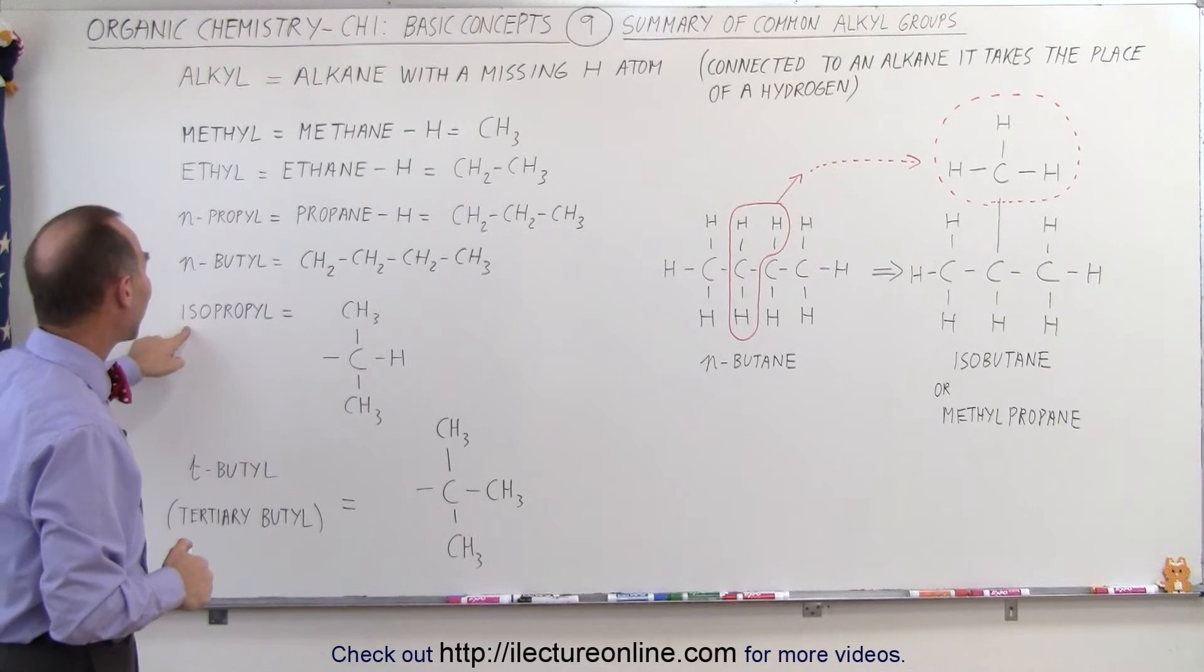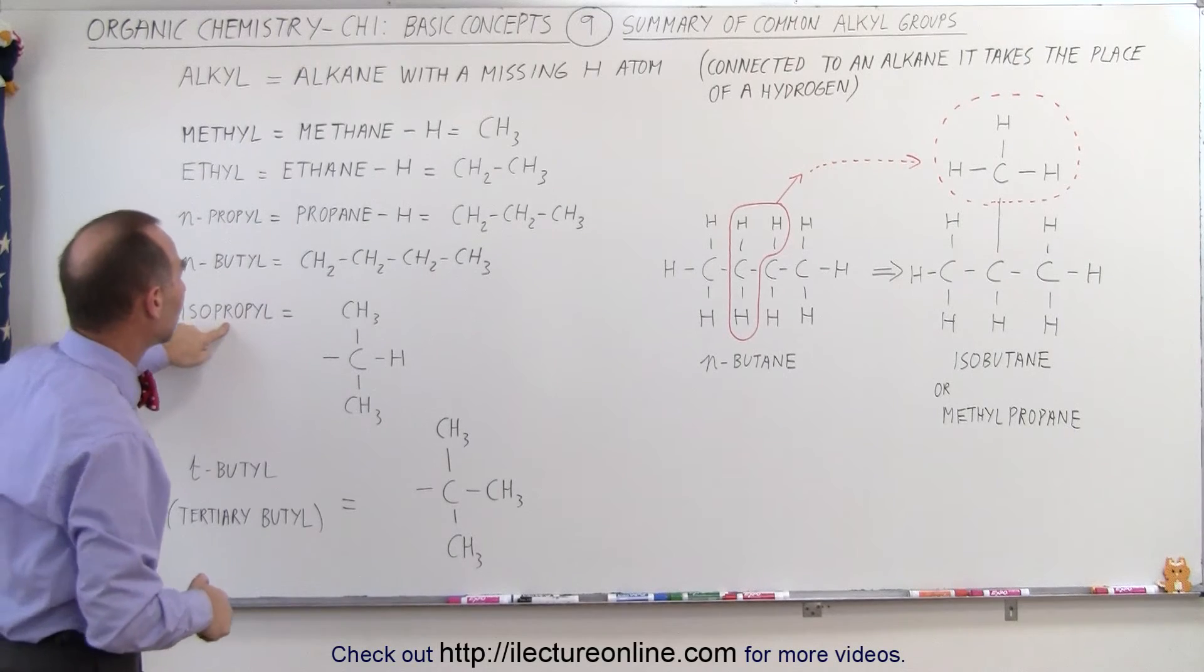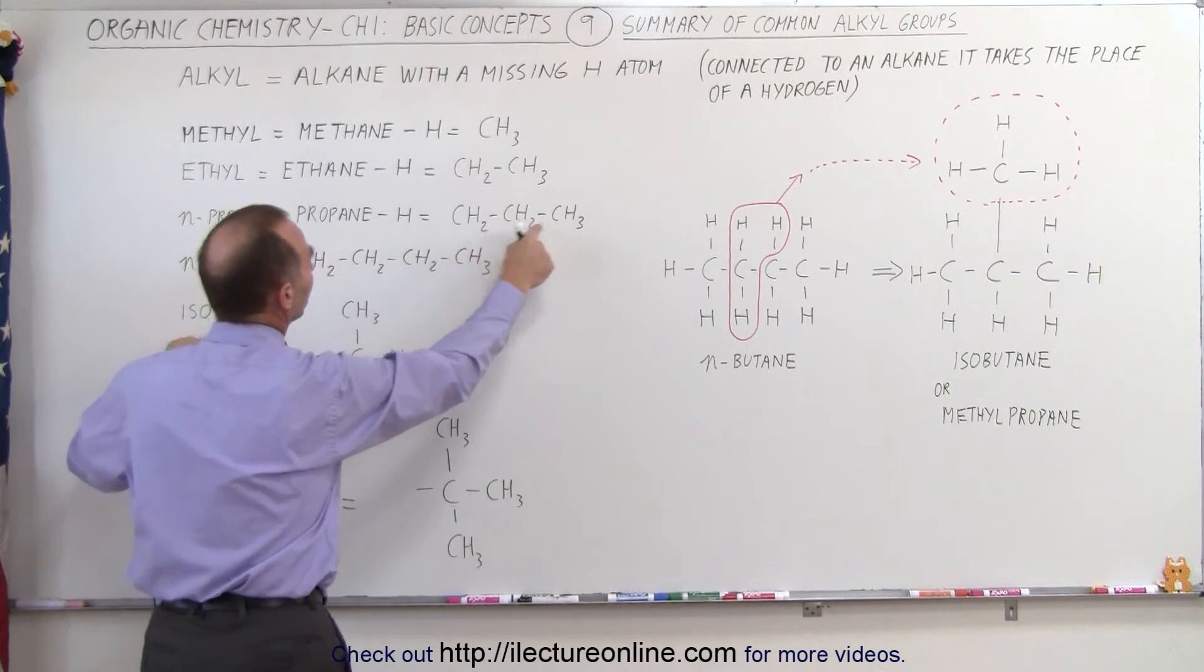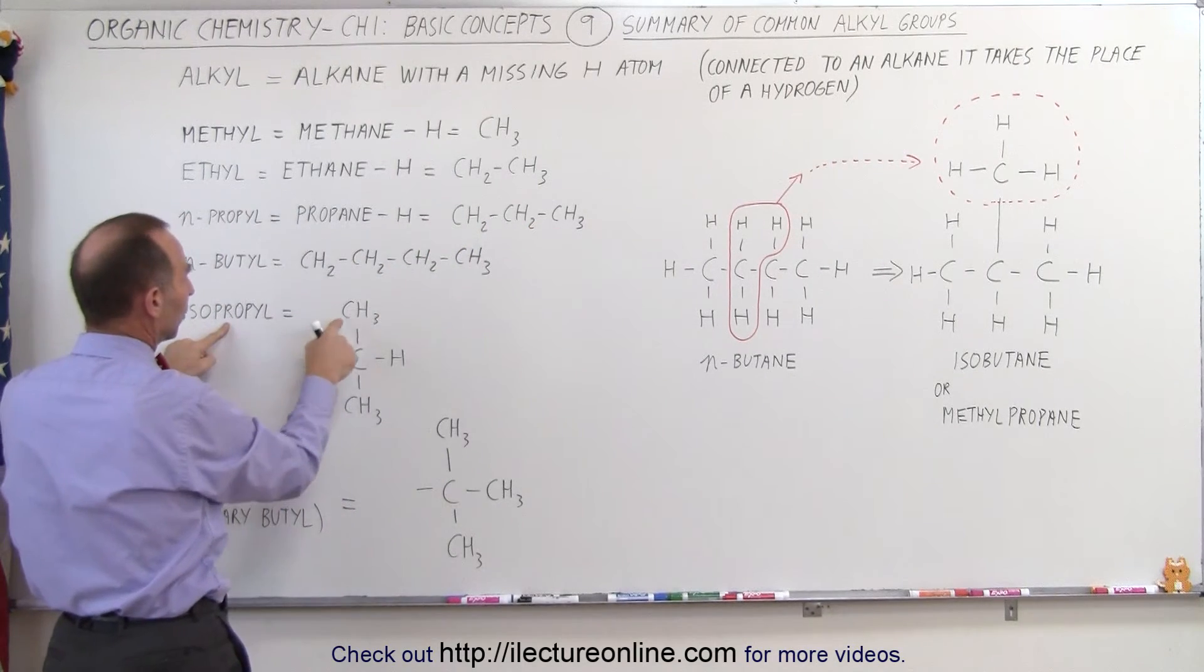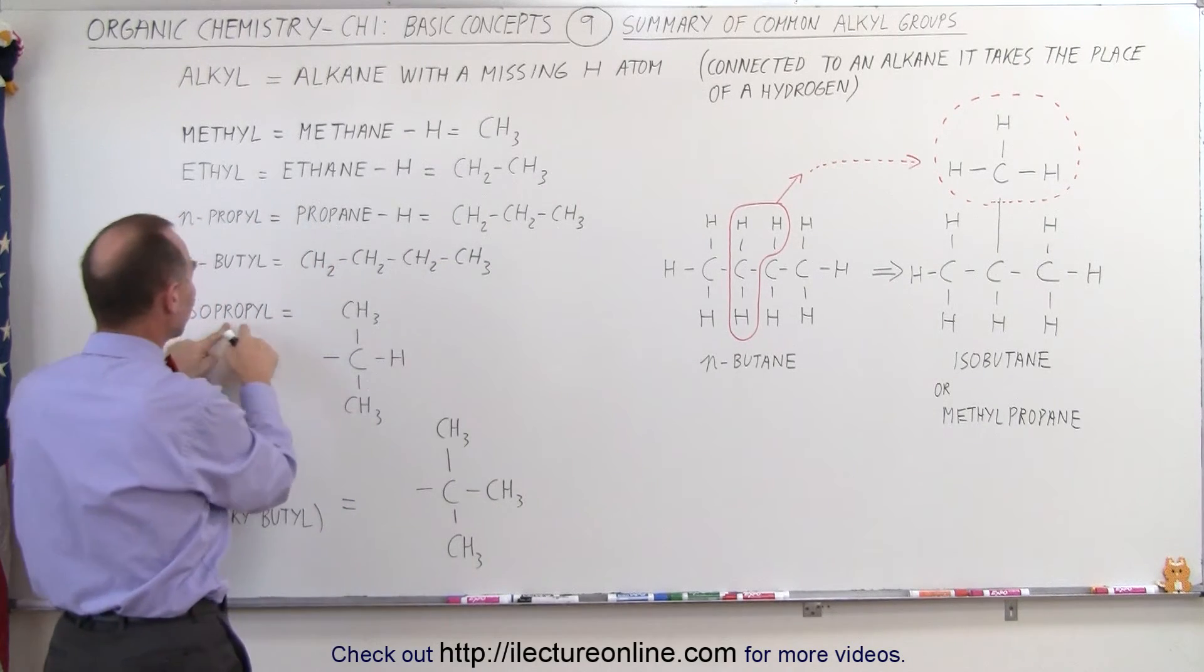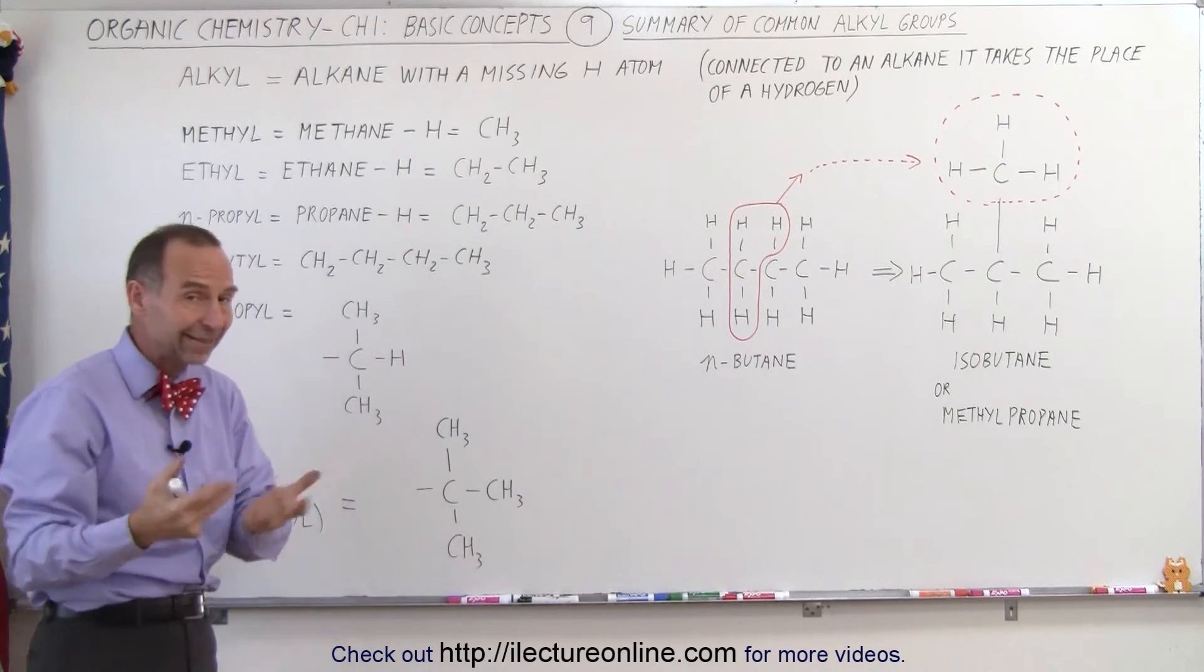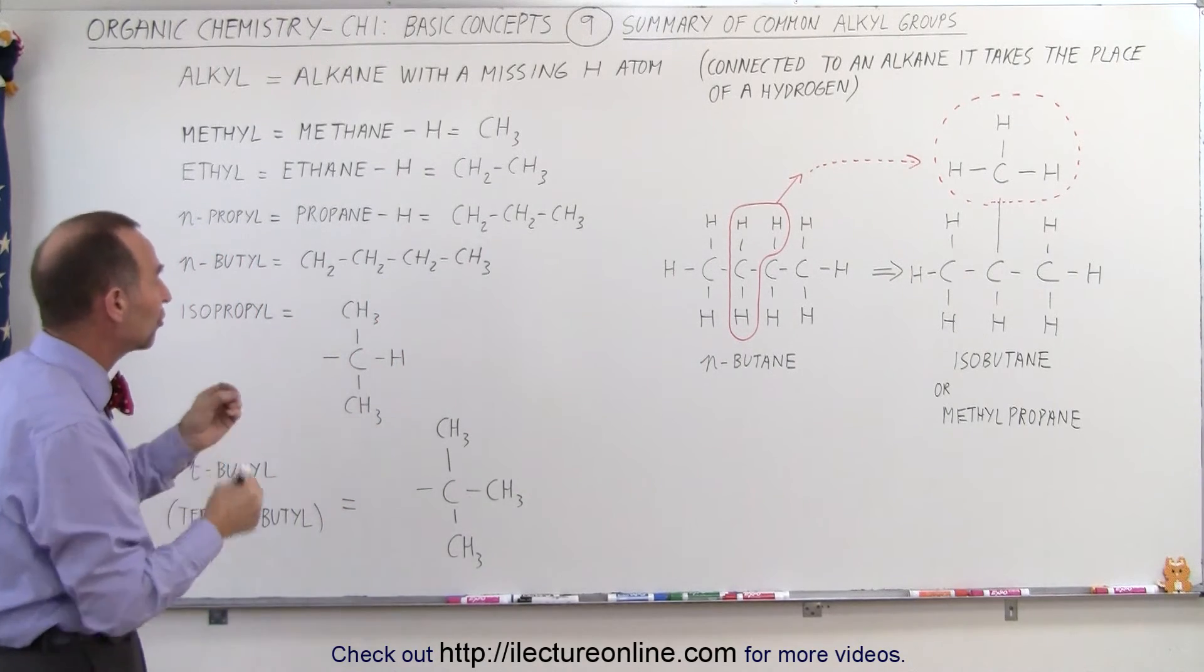We can also have what we call isopropyl. Now take a look at n-propyl and isopropyl. N-propyl has three carbons, so does isopropyl, one, two, three. And it has three, five, seven hydrogens, and so does isopropyl, three, six, seven hydrogens. So chemically, it's exactly the same, but it's arranged differently.